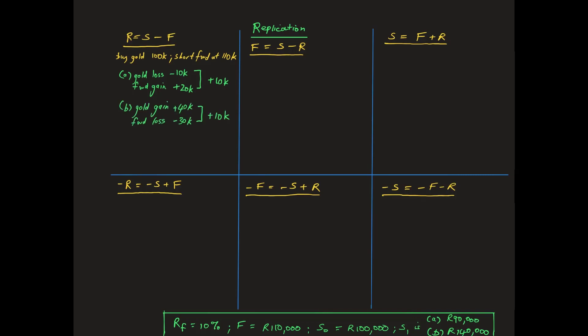In case B, the gold spot price ends the year R40,000 higher than it started, resulting in a gain of this amount. The forward incurs a loss of R30,000 because the position was a short and the expiration spot price is R140,000 in comparison with a forward price of R110,000.